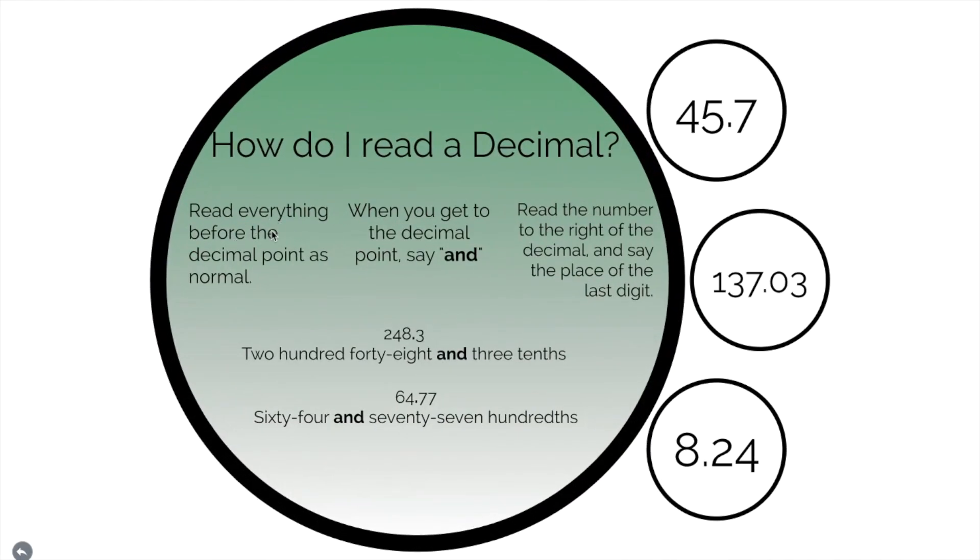Read everything before the decimal point as normal. When you get to the decimal point, say and. Read the number to the right of the decimal and say the place of the last digit.